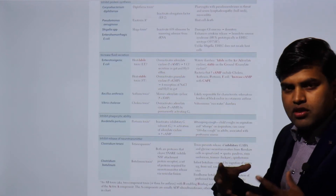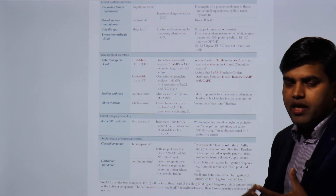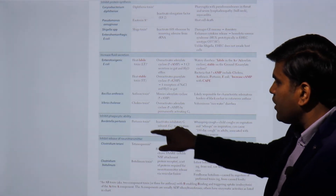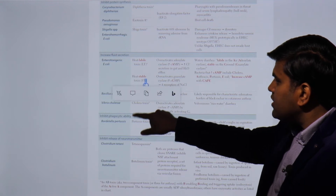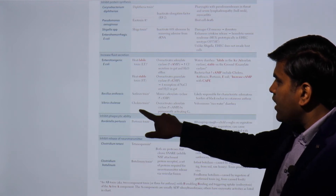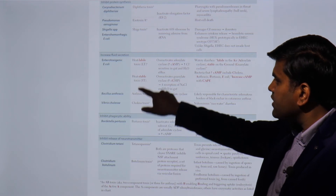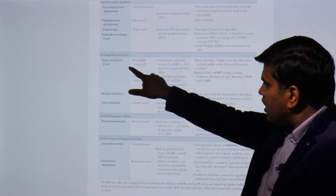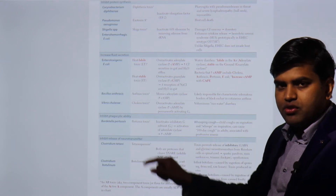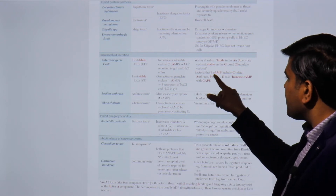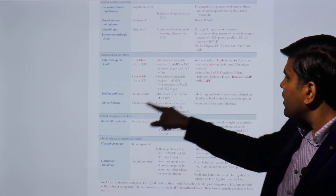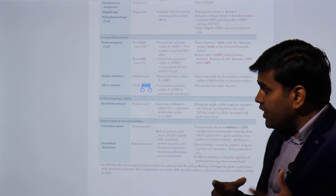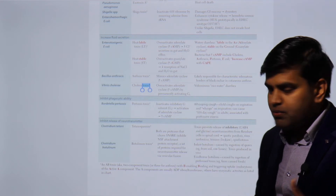Some toxins increase fluid secretion from the body, causing diarrhea and other damage. A useful mnemonic is CAMP: C for Cholera, A for Anthrax, M for the toxin (tilt M and it becomes E), and P for Pertussis. These are the toxins that increase cyclic AMP and cause increased fluid secretion.